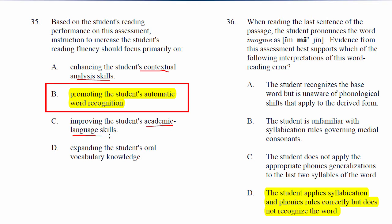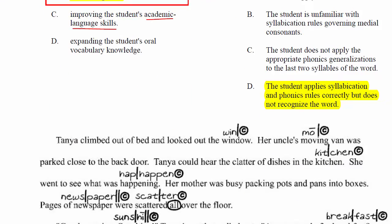I would read the questions first, just like I did, before even touching the passage. I would also read question 36: When reading the last sentence of the passage, the student pronounces the word 'imagine' as 'amajen' or 'imajen' — however that is pronounced. Evidence from this assessment best supports which of the following interpretations of this word reading error. Notice that you can answer Q35 by just skimming the stimulus data — you don't have to read the whole thing. And for Q36, you only need the last part of it.